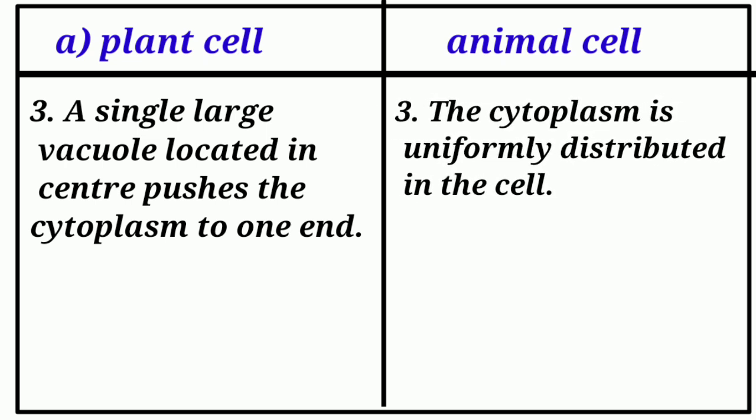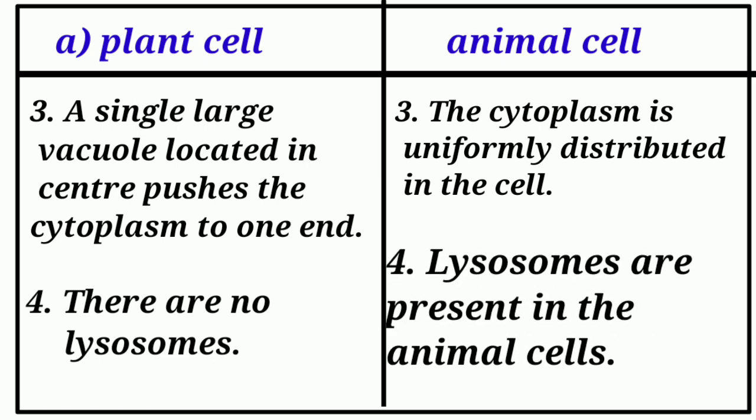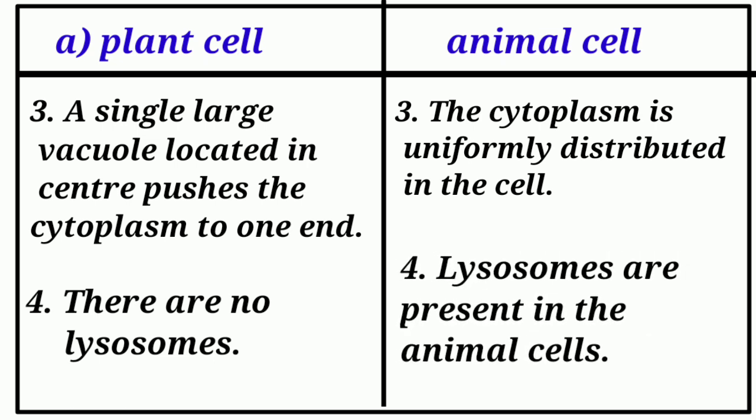Animal cells: The cytoplasm is uniformly distributed in the cell. There are no lysosomes. Animal cells: lysosomes are present in the animal cells.